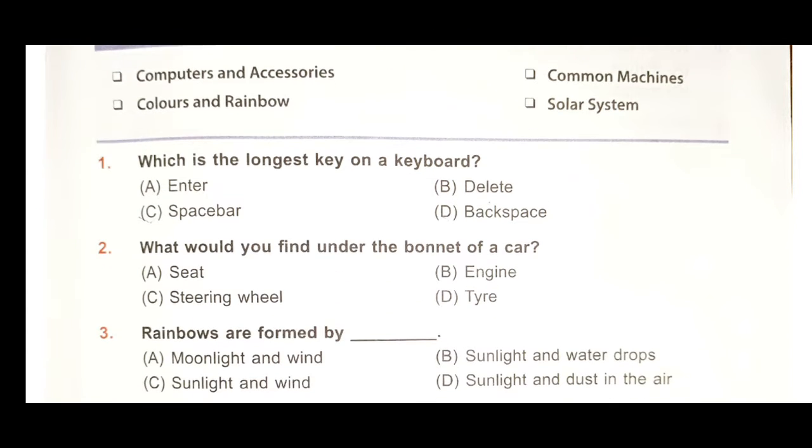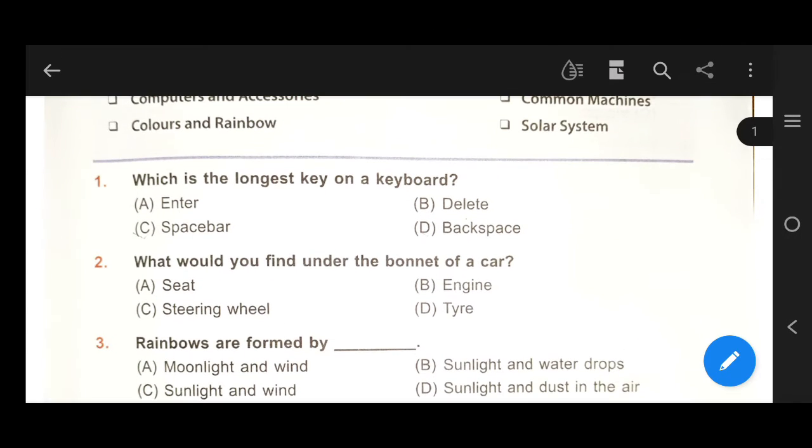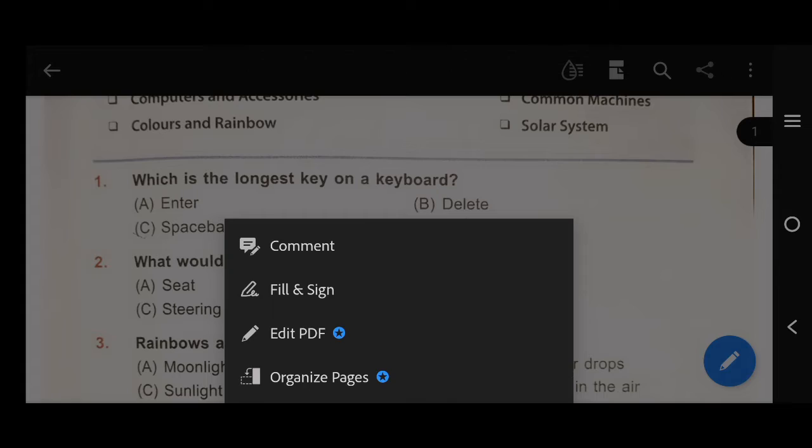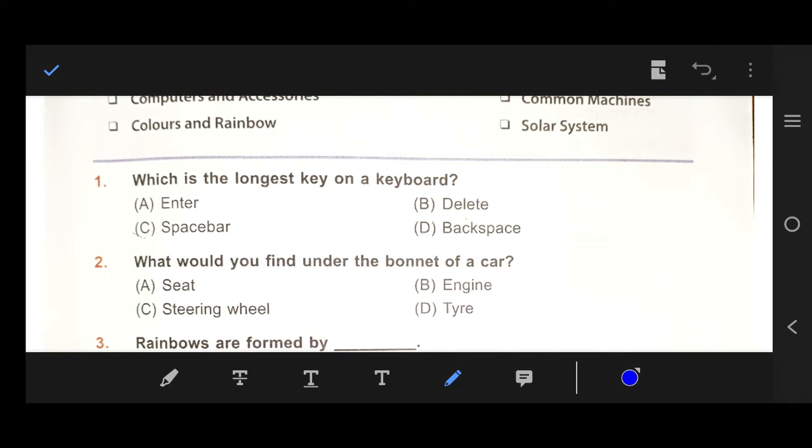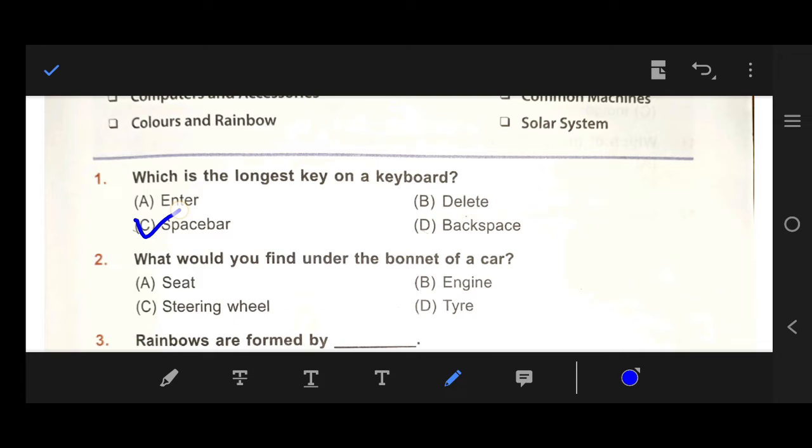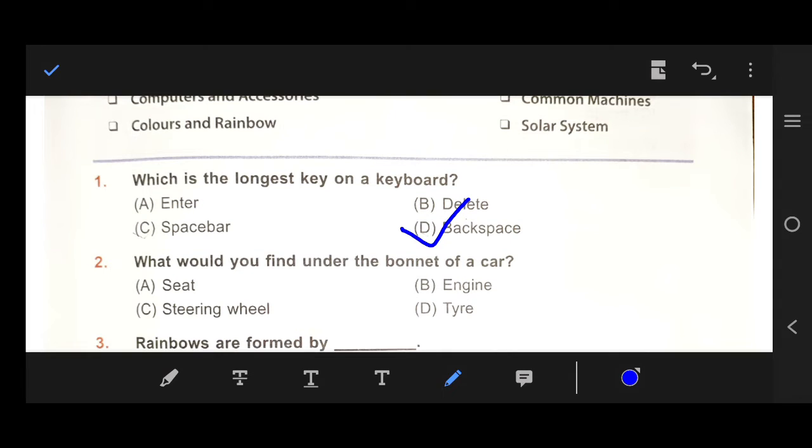Number 1, which is the longest key on a keyboard? Our right answer is C, space bar. Next, number 2, what would you find under the bonnet of a car? So, our right answer is B, engine.